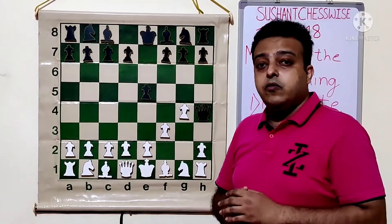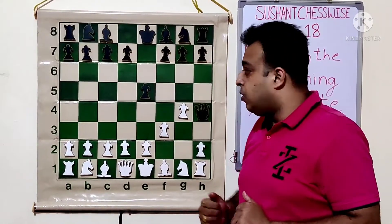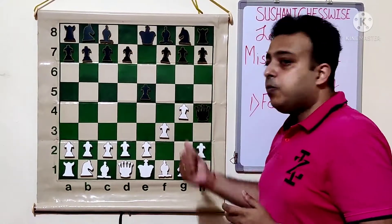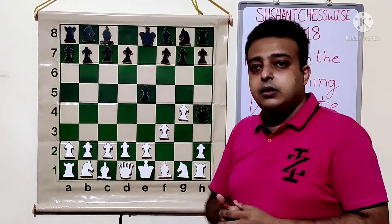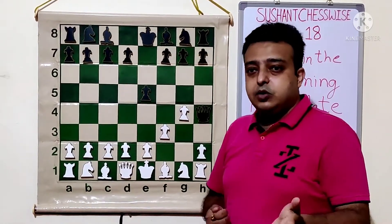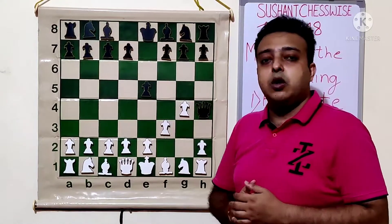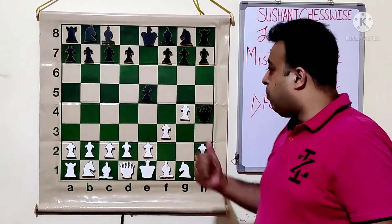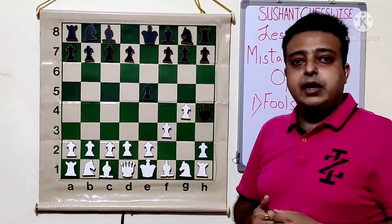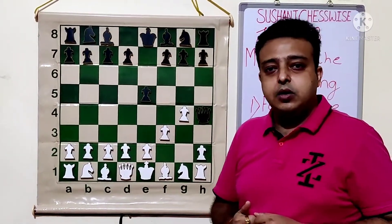It has become a checkmate. This is called Fool's Mate — only a fool would play like that. That is why this game is called Fool's Mate. We will look at one more example of diagonal weakness.